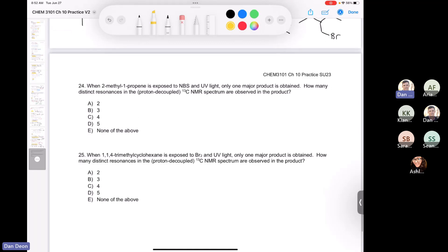Alright, getting closer to the end here. I think we only have two questions left. When 2-methyl-1-propene is exposed to NBS and UV light, only one major product is obtained. How many distinct resonances in the proton decoupled carbon-13 are observed in the product? So let's see here. If we have 2-methyl-1-propene, so let's just draw, so 2-methyl-1-propene would be this compound here. That also is called isobutylene. That's the common name of this compound, it's isobutylene.